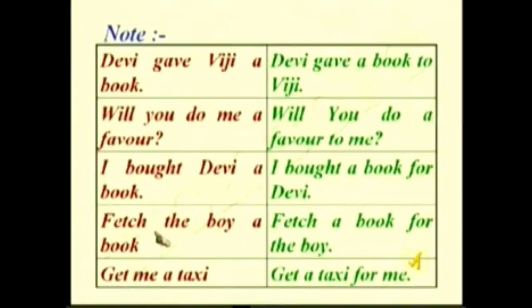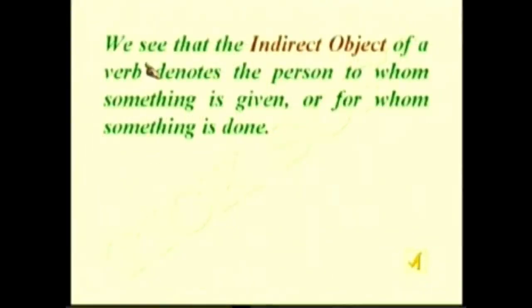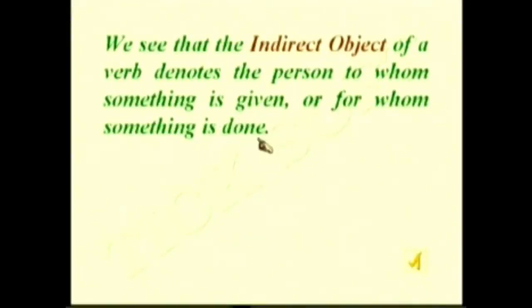The indirect object of a verb denotes the person to whom something is given or for whom something is done — 'given' and 'done' indicate the indirect object.